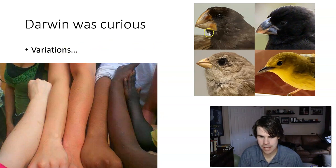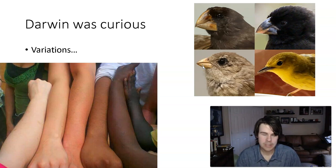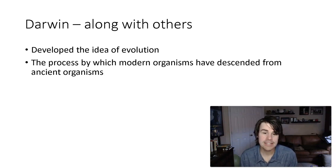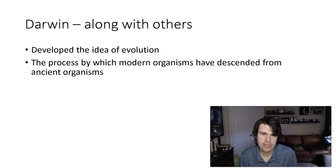These are some of the finches that he saw. Notice the different size beaks. Darwin was questioning all this — like, why is there so much variation? Would God really create each species like this? And I'll talk to you in a second about how Darwin had a misunderstanding of what Genesis actually says. Darwin, along with others, developed the idea of evolution. Evolution in your book is defined as the process by which modern organisms have descended from ancient organisms. According to evolution, humans descend from an ape-like creature — that's not what the Bible teaches.